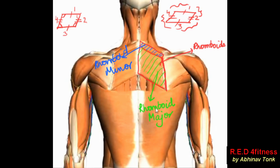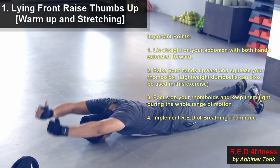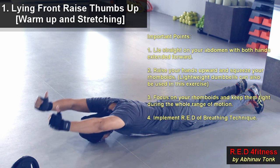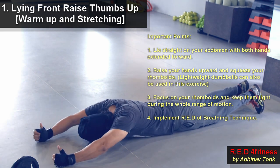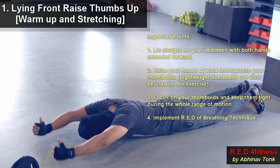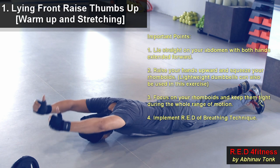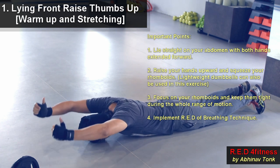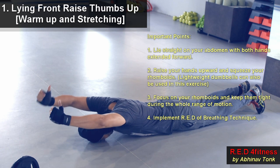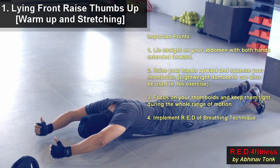The first exercise is the lying front raise thumbs up, which is for warm-up and stretching. Lie straight on your abdomen with both hands extended forward and raise your hands upward, squeezing your rhomboids. You can use lightweight dumbbells as well. Focus on your rhomboids and keep them tight during the whole range of motion, and implement the RED breathing technique.